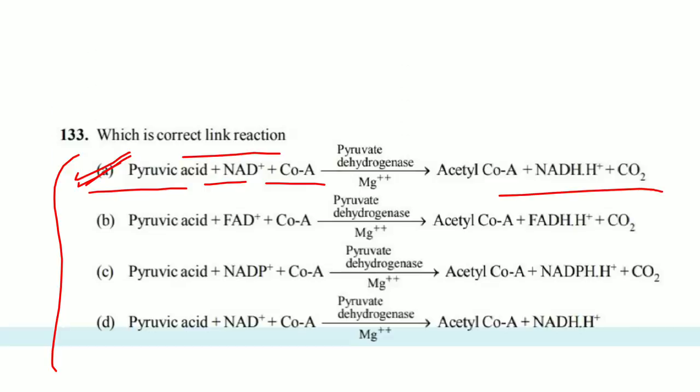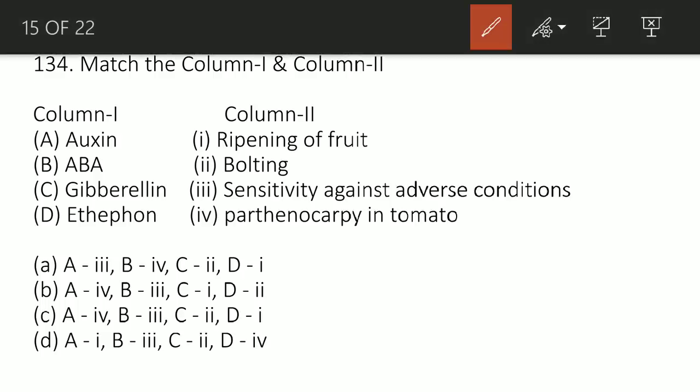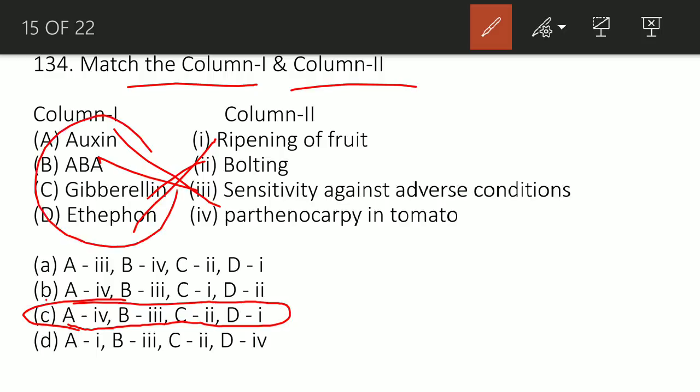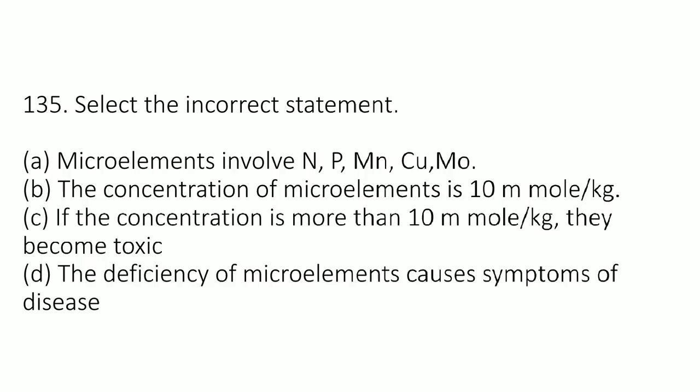Match column number first to column number second. The correct option is C. A: Auxin goes with Parthenocarpy in tomato. B: ABA goes with sensitivity against adverse condition. C: Gibberellin causes bolting. D: Ethylene causes ripening of fruit. If these increase, these are the effects that happen.